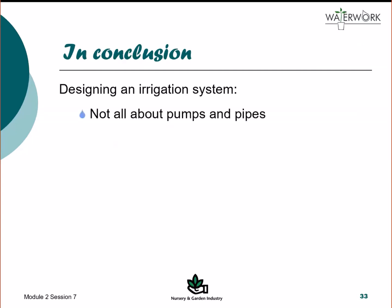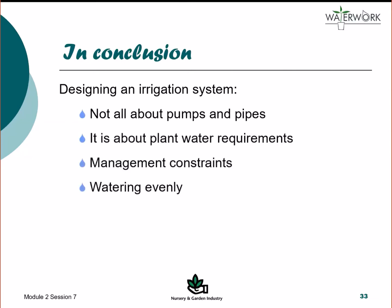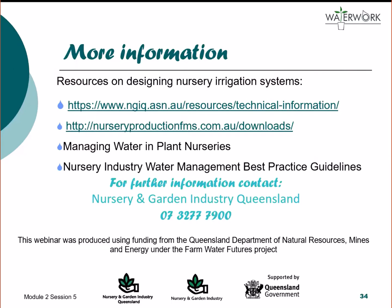In conclusion, designing an irrigation system is not solely about pumps and pipes — it's about plant water requirements, management constraints and watering evenly. These are the nursery operator's domain. Once these are determined, a good irrigation designer can prepare an efficient design that supports a profitable nursery operation, resulting in a system that works for you, not you working for the system. More information on designing nursery irrigation systems can be found at these websites and in these publications. For more information, contact the Nursery and Garden Industry Queensland.